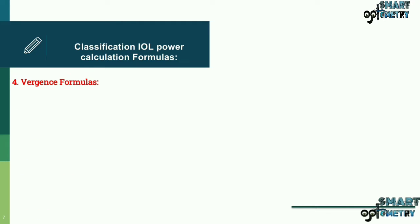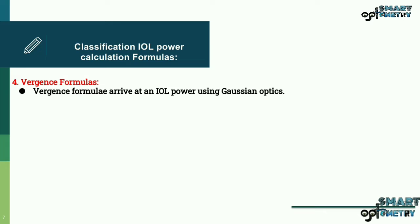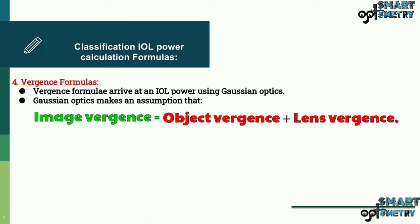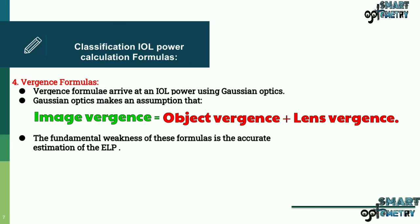Now vergence formulas. Vergence formula arrived at an IOL power using Gaussian optics. Gaussian optics makes an assumption that image vergence equals object vergence plus lens vergence.